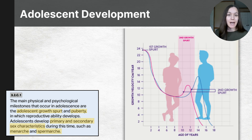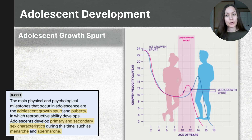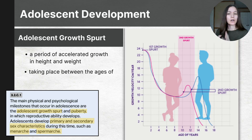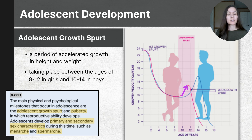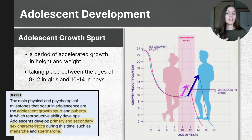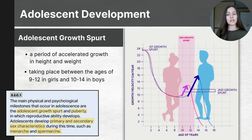One of the most noticeable changes in adolescence is the adolescent growth spurt, which is a period of accelerated growth in height and weight. This growth typically begins earlier for girls, starting around the ages of 9 to 12, whereas for boys it typically begins between the ages of 10 to 14, with boys then catching up and surpassing girls in height during later adolescence. Along with these changes, muscle mass increases and body composition shifts, with boys generally gaining more muscle and girls accumulating more body fat as they mature.